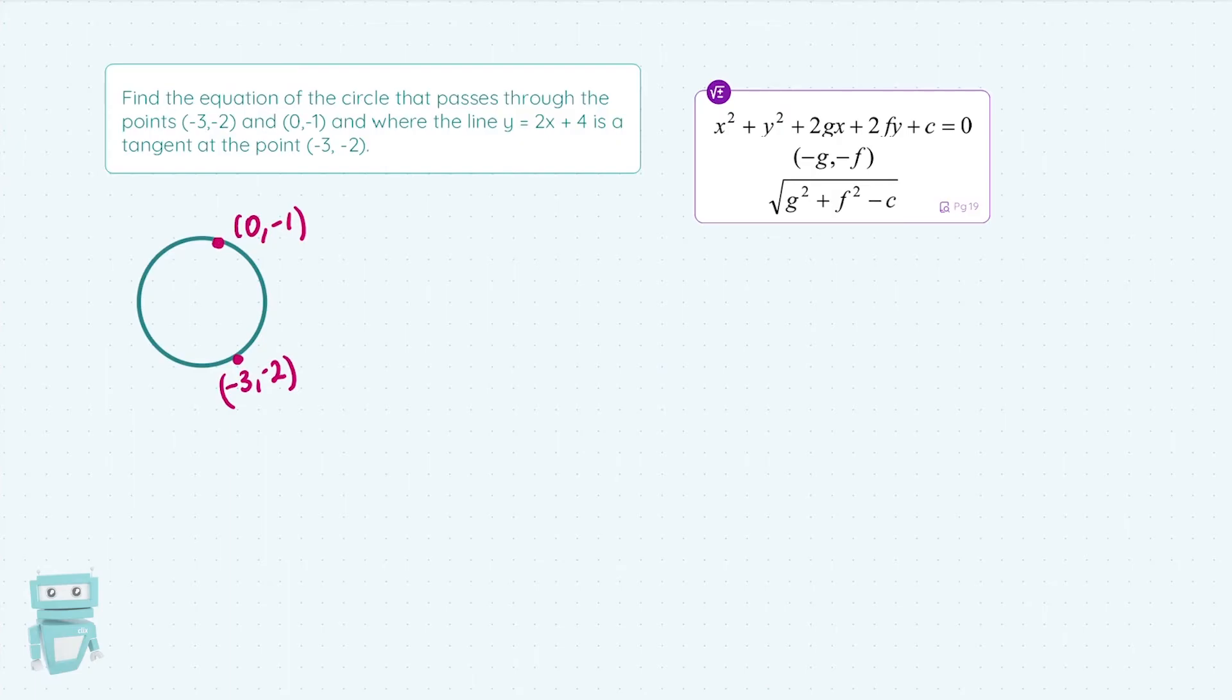And this one here, a line is a tangent at the point. So, when I say a tangent, it means a line that touches the circle or touches the graph at one point only. Now, without using a ruler, that's not a bad straight line. So, at the point (-3,-2), we have a tangent going on.